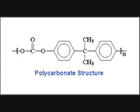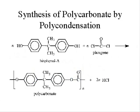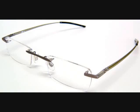Polycarbonates are a group of polymers whose monomers contain carbonate groups. The main polycarbonate material is produced by the reaction of bisphenol A, or BPA, and phosgene, COCl2. Polycarbonates have high-impact resistance and are used in CDs and eyeglasses.